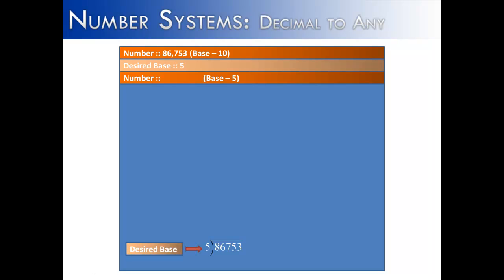What you do is you write out the base, which is base 5, you divide that base into the number. And when we do that, we get 17,350. That's how many times 5 goes into 86,753, and there is a remainder of 3, and we're going to do something with that remainder later.